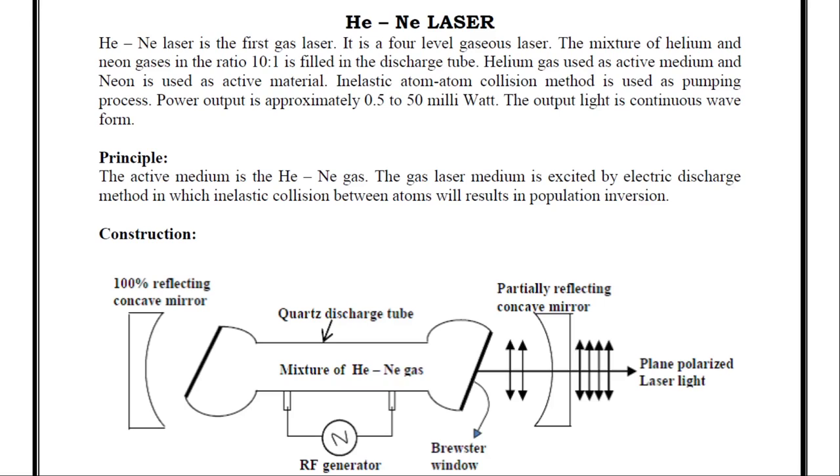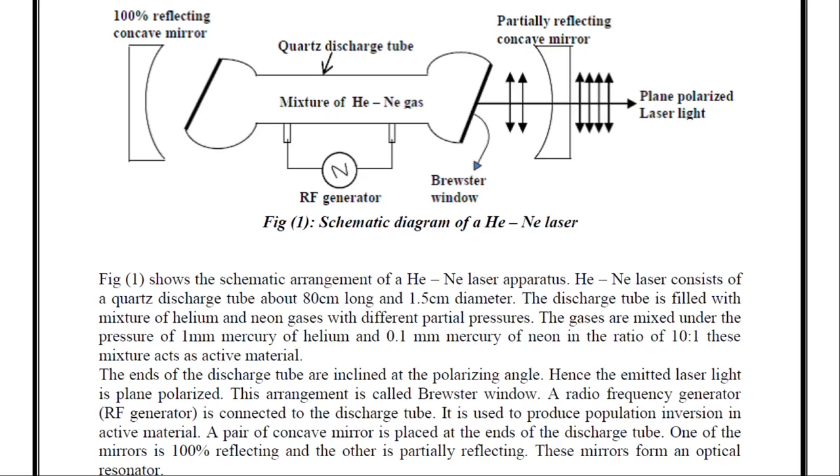This is the schematic diagram of helium-neon laser. Let us look at the construction of helium-neon laser. Helium-neon laser consists of quartz discharge tube. It is about 80 centimeter long and 1.5 centimeter in diameter. The discharge tube is filled with mixture of helium and neon gases with different partial pressures. The gases are mixed under the pressure of 1 millimeter of mercury of helium and 0.1 millimeter mercury of neon.